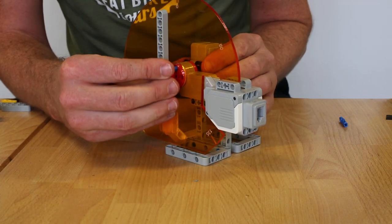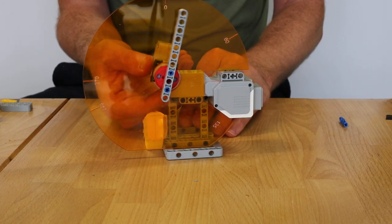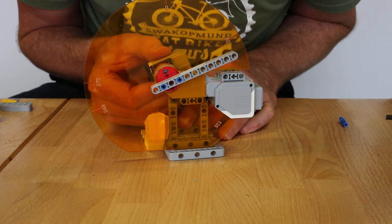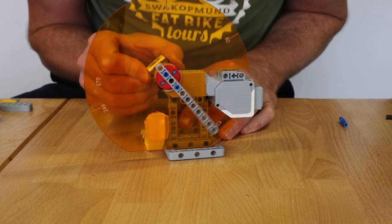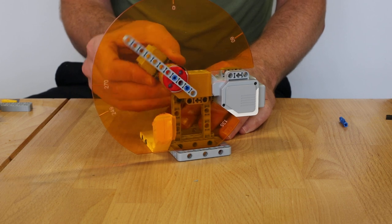Then the pointer arm clips on here, and your challenge is going to be to make it rotate through zero, 60, I think it's 135, 249, and 270 degrees, and then back to the start.